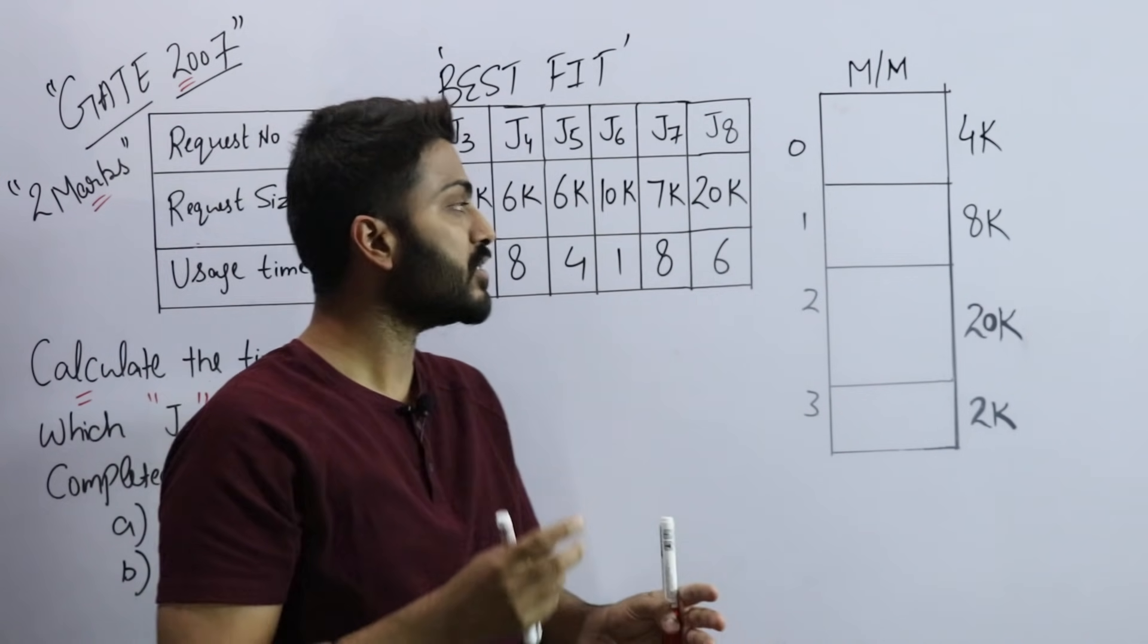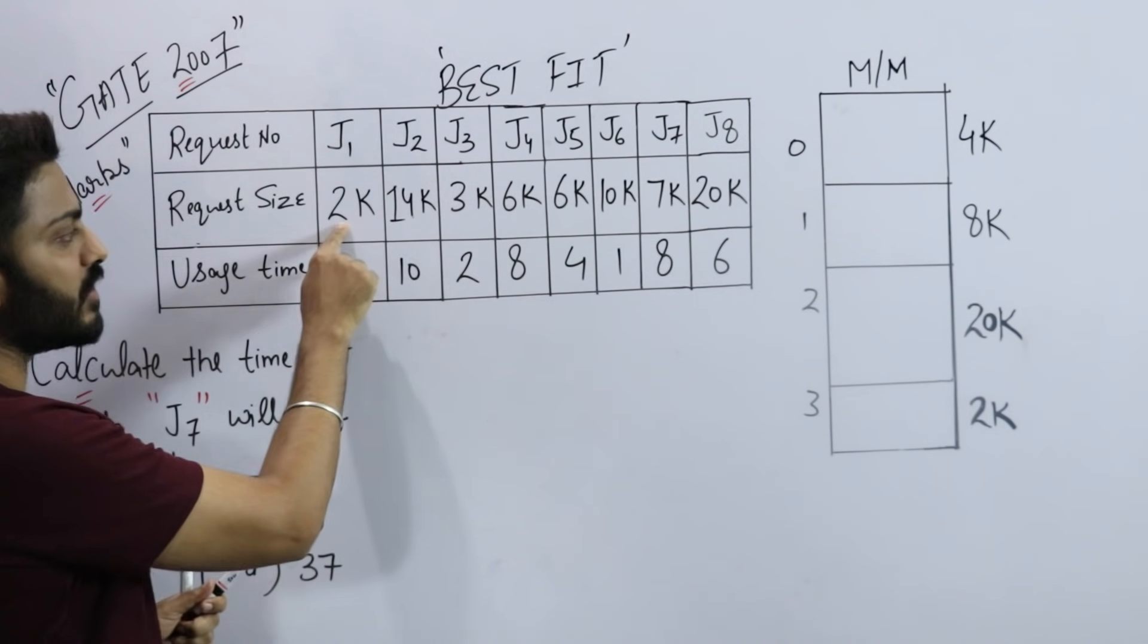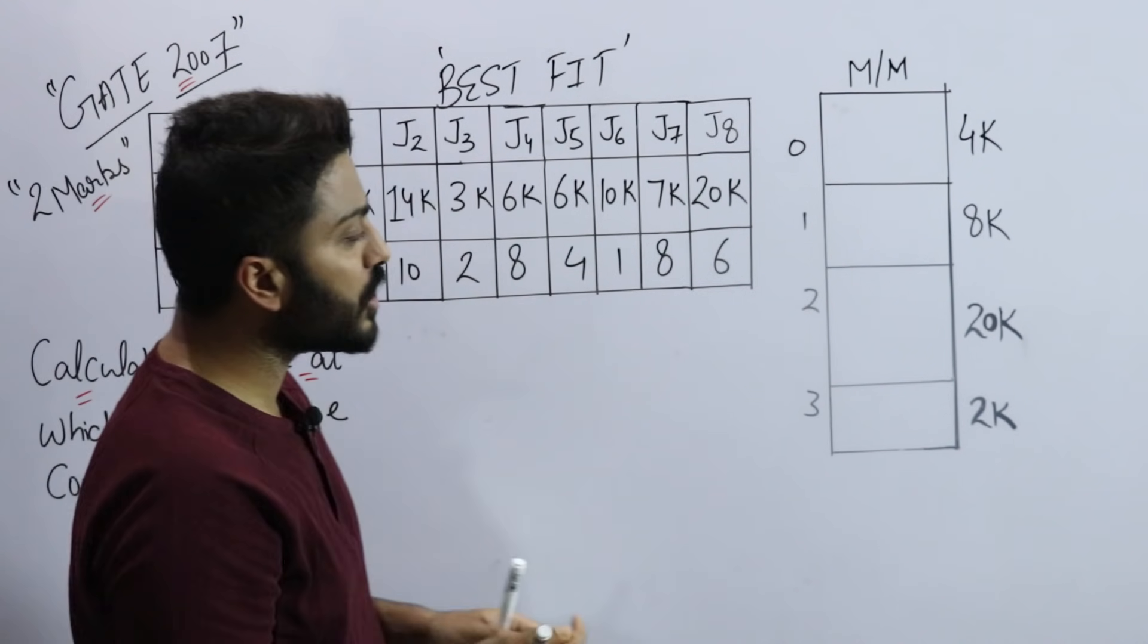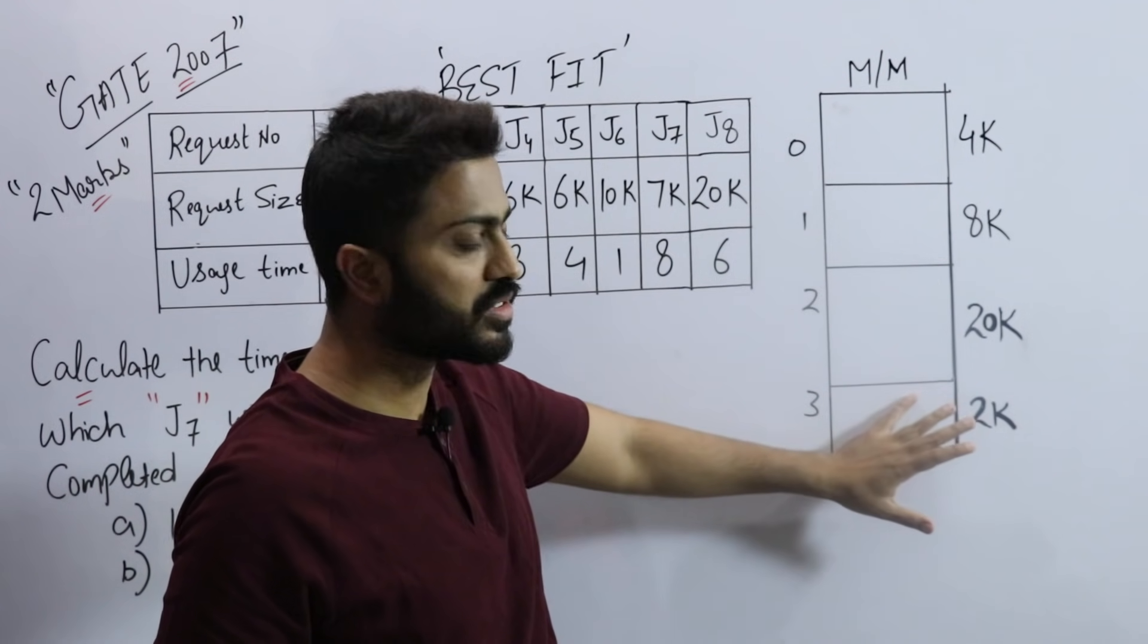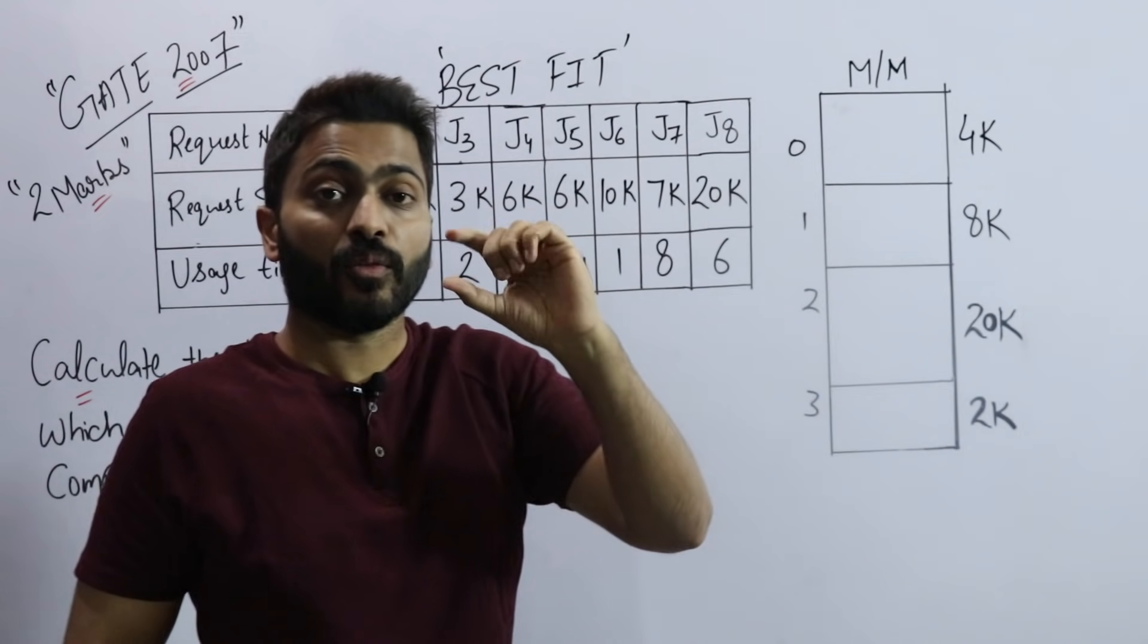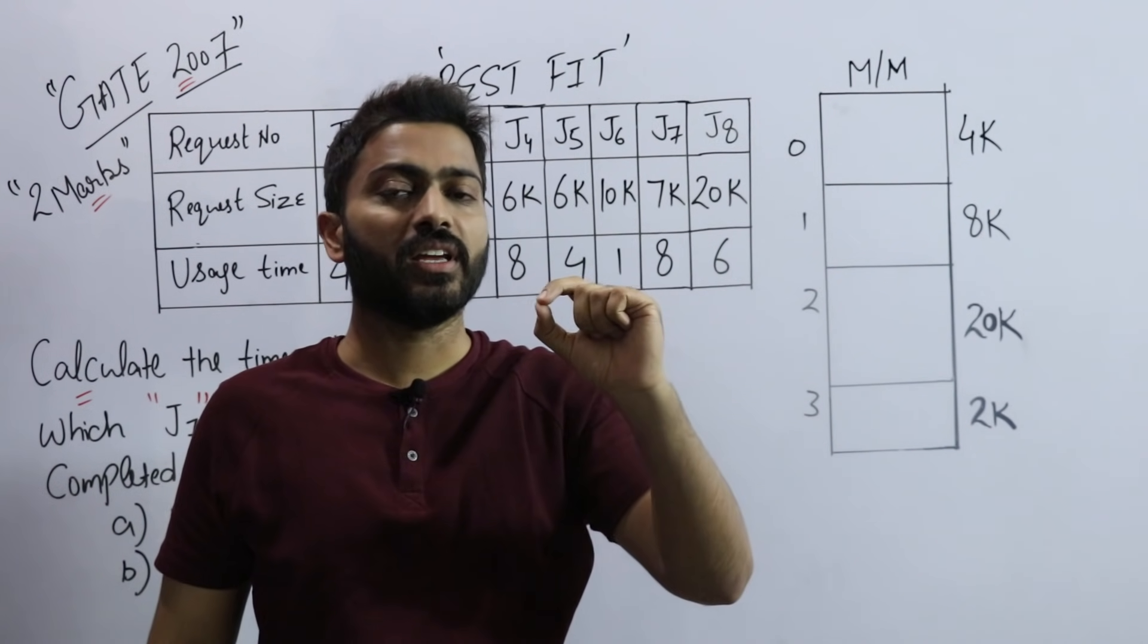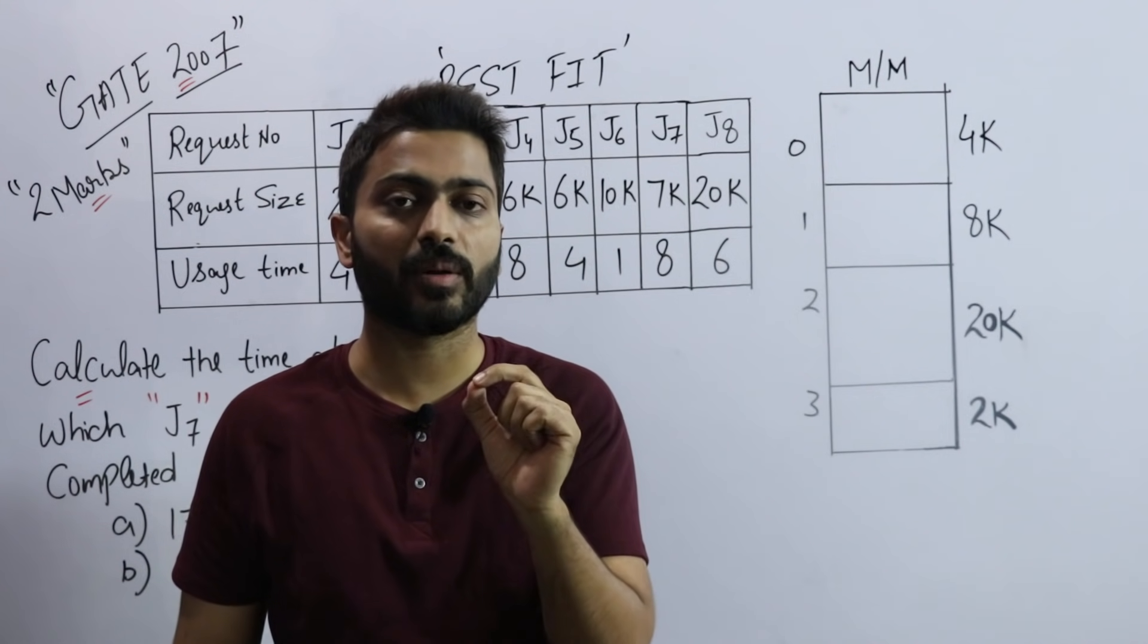Let's start with J1. J1 needs 2k of memory. According to best fit, initially all four slots are empty. According to best fit, when we put the process in memory, the remaining space should be least. This is the concept of best fit.